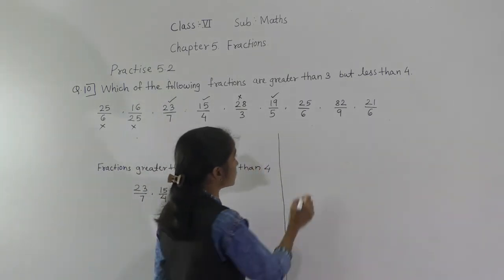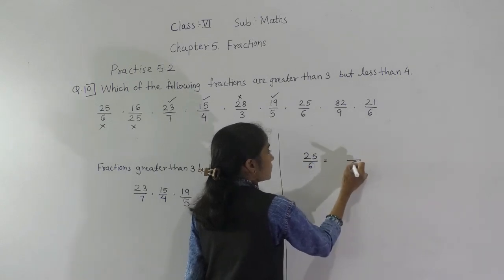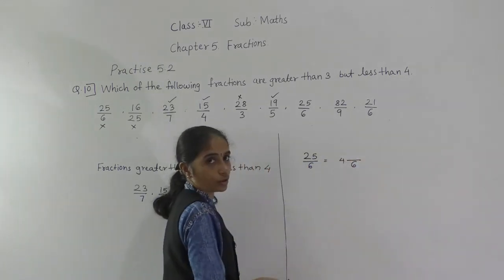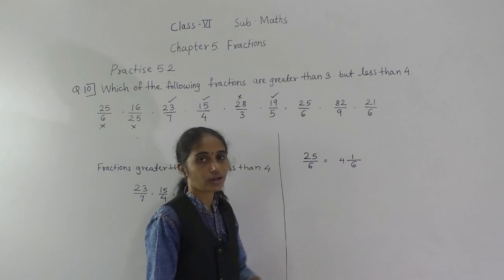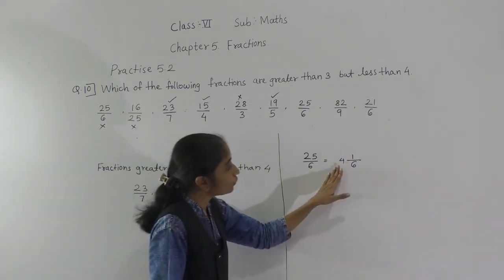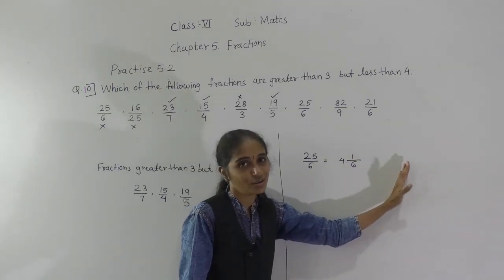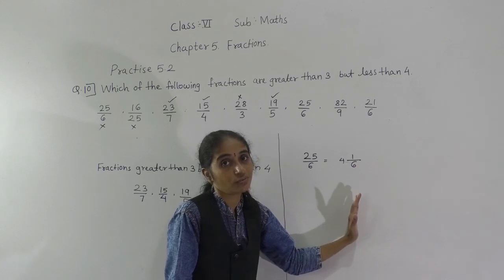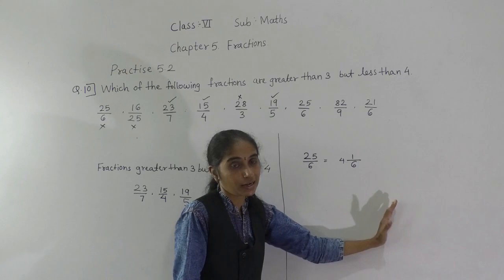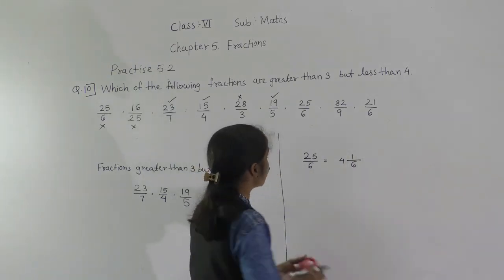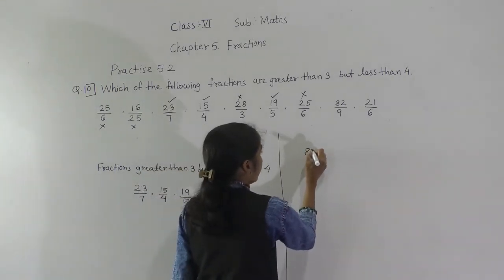Next: 25 upon 6. Convert: 6 fours are 24, remainder 1, giving 4 and 1 upon 6. The whole number part is 4, so this fraction is greater than 4 and will not come. Next: 82 upon 9. Convert: 9 nines are 81, remainder 1, giving 9 and 1 upon 9. The whole number part is 9, greater than 4, so this will not come either.